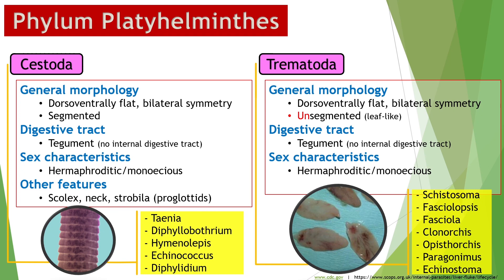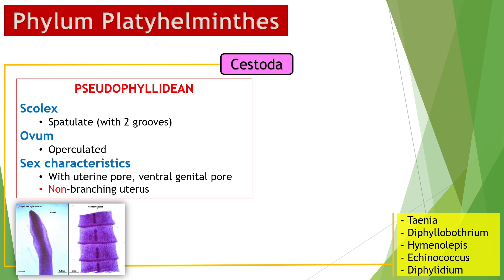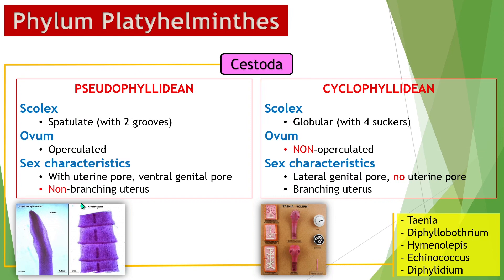Tapeworms are typically longer than flukes, and their body is segmented into smaller subunits called proglottids. They also have a prominent anterior portion called the scolex. Flukes do not have a scolex or proglottids. Cestodes or tapeworms are further subdivided into two distinct orders. Pseudophyllidians have flat, elongated, spatula-like scolex, and their ova are operculated. They also have non-branching uterus inside the proglottids. Among medically important parasites, only Diphyllobothrium belongs to this order. Cyclophyllidians have globular scolexes with four prominent suckers, their ova are not operculated, and their proglottids contain visible, highly branched uteri. Most medically important tapeworms are cyclophyllidians.